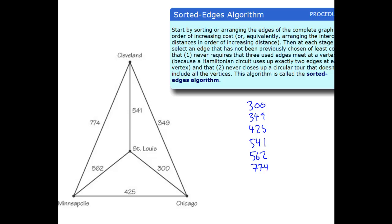All right. So then I'm going to build my Hamiltonian circuit. I'm going to start with the lowest edge or the edge at the top. I'm going to highlight that. Then from there I'm going to go with the 349. And then the 425. Now this 425, if I highlight it, I have three routes coming from Chicago, which violates one of my two rules. So I can't use the 425. I'm going to cross that out. The 541. If I highlight this one, I've created a circuit, but I haven't hit Minneapolis, so that violates another rule. So I cannot use the 541. Then I'm going to go with the 562. And then the 774. And this is the only solution with sorted edges.